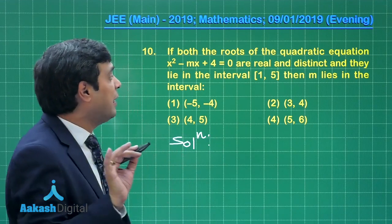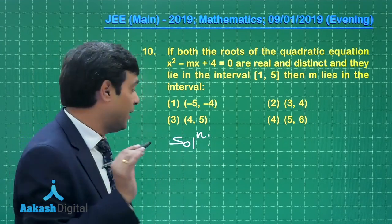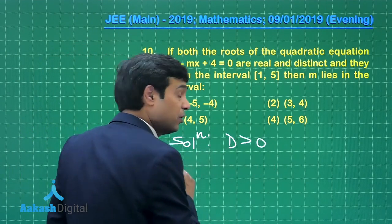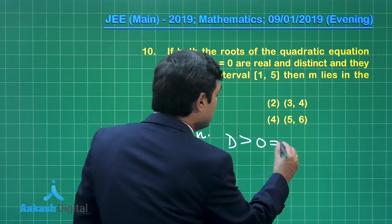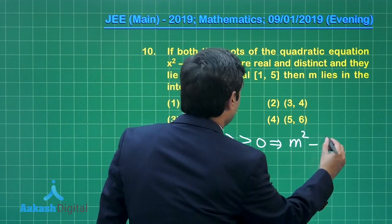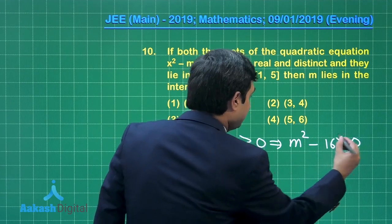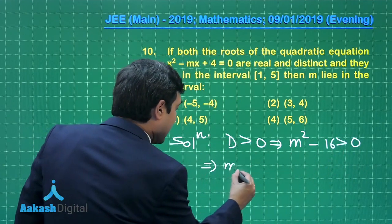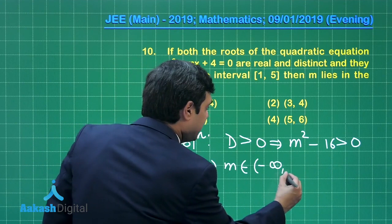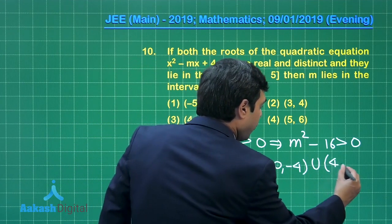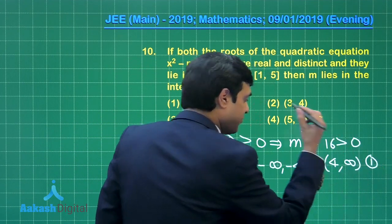Both roots are distinct and real. So the first requirement is D > 0. When you solve D > 0, you get m² - 16 > 0, or m belongs to (-∞, -4) ∪ (4, ∞) as the first result.